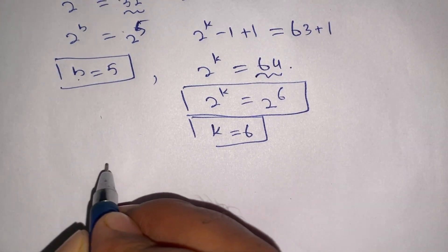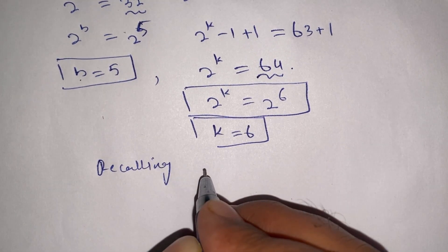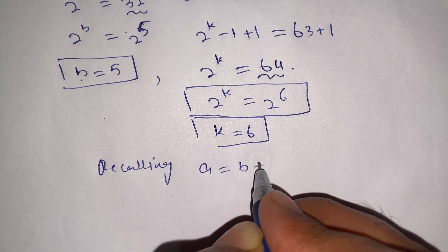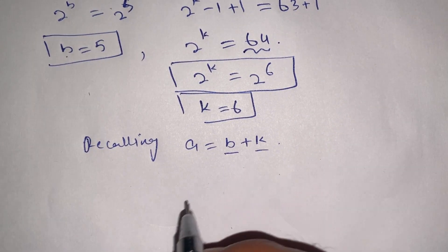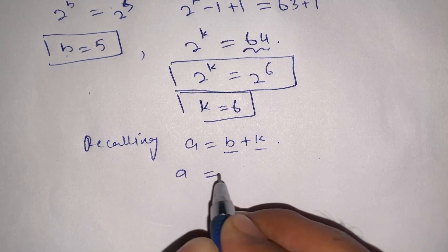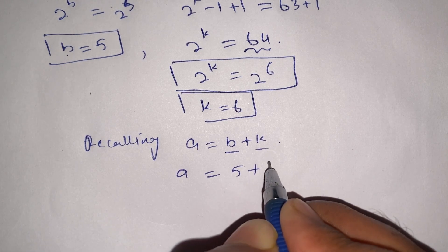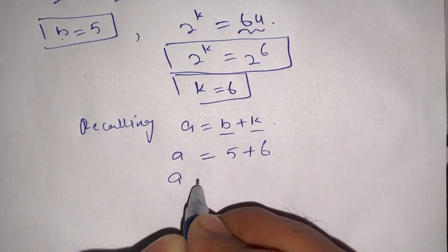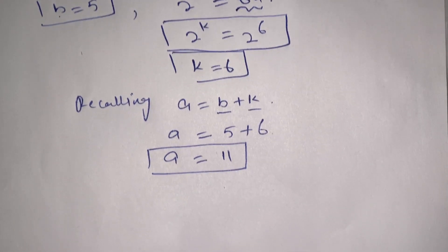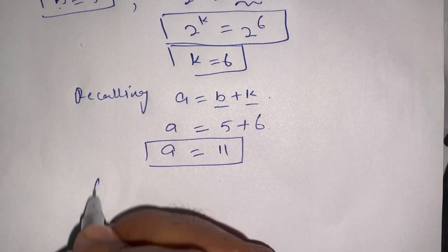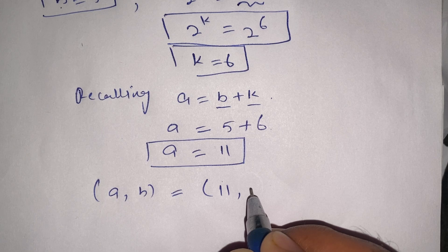In the next step, recalling our substitution a equals b plus k, and substituting the values of b and k, we get a equals 5 plus 6. Thus a equals 11. So our values are a equals 11 and b equals 5.